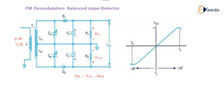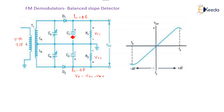Due to the use of the center-tap secondary, the input voltages to the slope detectors are 180 degrees out of phase. There are three tuned circuits: the primary is tuned to fc, the center frequency; the upper tuned circuit of the secondary is tuned to a frequency above fc, called fc plus Δf; and the lower tuned circuit is tuned to a frequency below fc, called fc minus Δf. The combinations R1C1 and R2C2 are used to filter out the RF ripple.